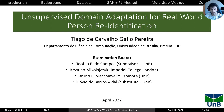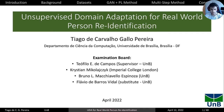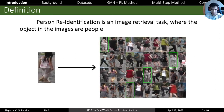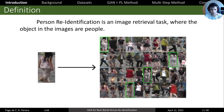My work is entitled 'Unsupervised Domain Adaptation for Real-World Person Re-Identification.' Person Re-Identification is an image retrieval task where the objects in the images are people. It can be used to do intelligent surveillance or multi-camera tracking for people, where you have a group of CCTV cameras collecting images of people across multiple non-overlapping cameras.